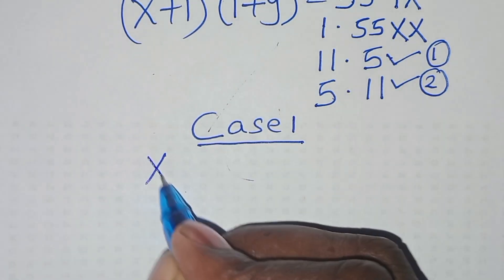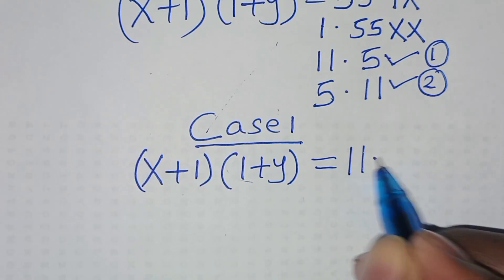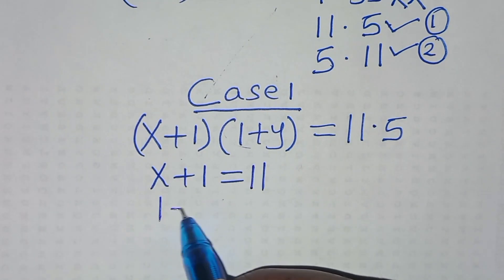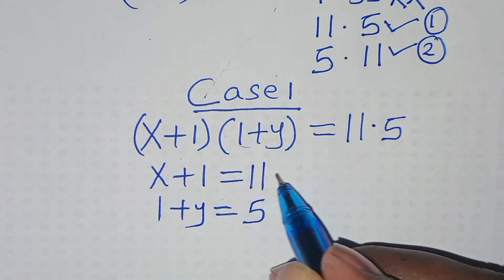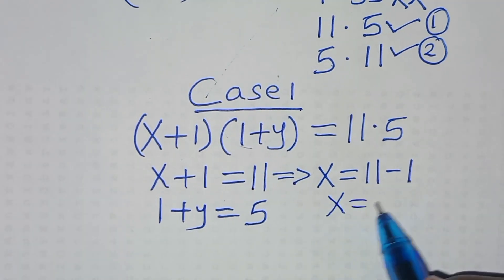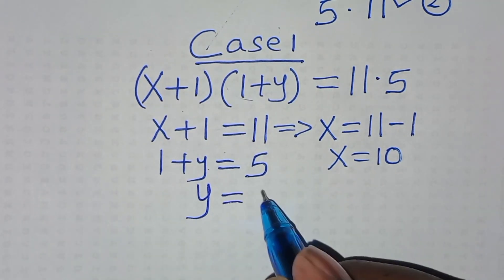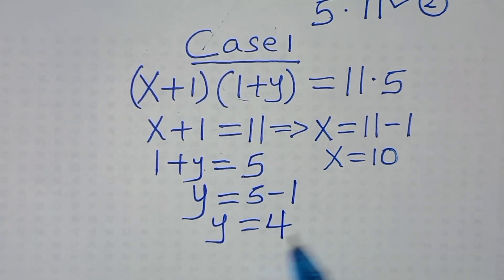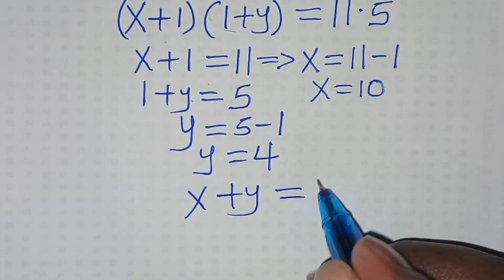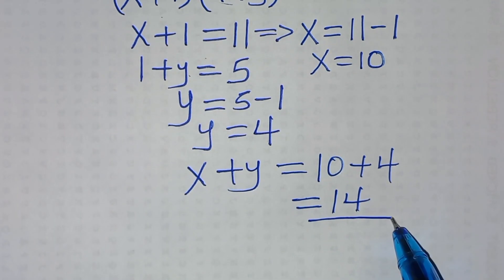For case 1, we have x plus 1 multiplied by 1 plus y, this is equal to 11 times 5. This implies that x plus 1 is equal to 11, and 1 plus y is equal to 5. From the first part, x is equal to 11 minus 1, so x is equal to 10. From the second part, 1 plus y equals 5, so y is equal to 4. From case 1, x plus y is equal to 10 plus 4, which is 14.